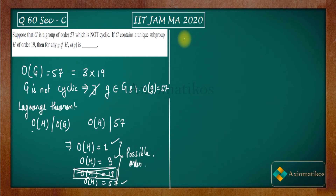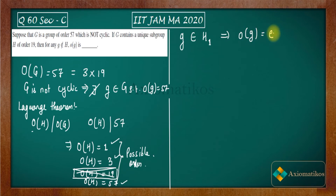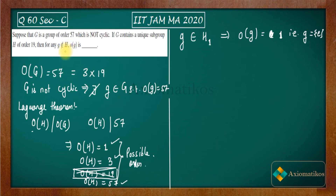So g can belong to a subgroup of order 1, 3, 19, or 57. Suppose g belongs to a subgroup of order 1 — then the order of g is 1, meaning g is the identity. But the identity must be inside H, so g cannot be the identity since g is not inside H. This case is not possible.